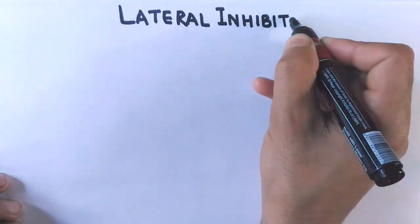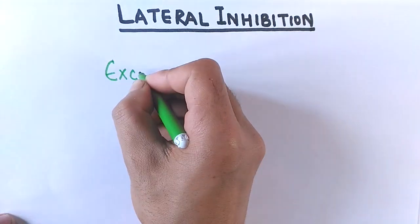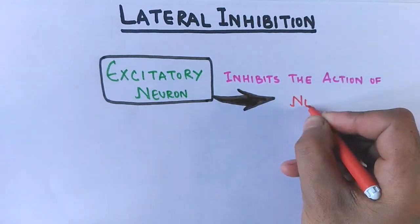Hello friends, in this video we'll be discussing lateral inhibition, a process where the excitatory neuron inhibits the action of neighboring neurons.